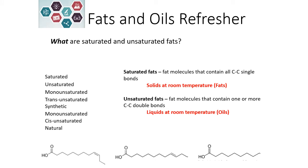Saturated fats contain all carbon-carbon single bonds. These tend to be solids at room temperature and come from animal sources — we typically call these fats. So these are things like butter or lard. They are solids at room temperature because their melting points are higher.